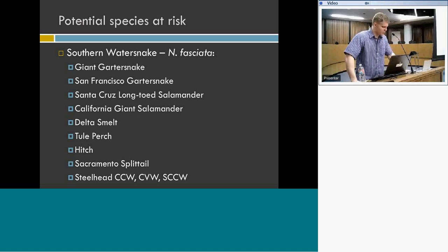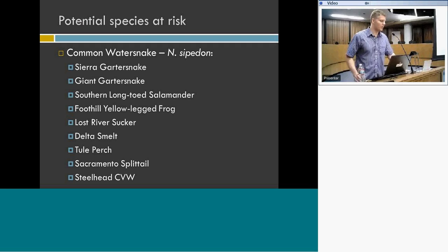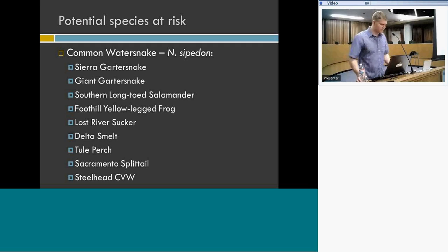The key message from these figures is that the southern water snake is likely to cause conflicts with the giant garter snake, San Francisco garter snake, Santa Cruz long-toed salamander, California giant salamander, Delta Smelt, tulip, hitch, Sacramento split-tail, and multiple steelhead runs including Central Coast, Central Valley, and South Central Coast winter runs. The common water snake is likely to affect the Sierra garter snake, giant garter snake, southern long-toed salamander, Foothill yellow-legged frog, Lost River Sucker, Delta Smelt, perch, Sacramento split-tail, and the Central Valley winter run steelhead.